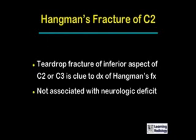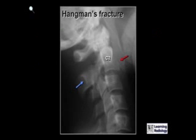Hangman's fractures may manifest as a teardrop-shaped fracture on the inferior aspect of the body of C2 or C3, so that's an important clue to look for on the lateral radiograph. Hangman's fractures that occur as a result of motor vehicle collisions are not associated with neurologic deficits.